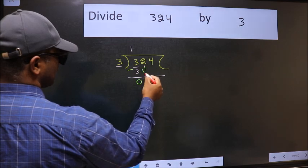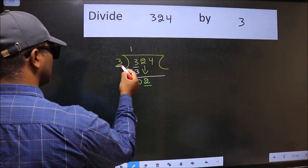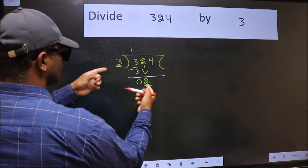After this, bring down the beside number. So 2 down. Now here we have 2 and here 3. 2 is smaller than 3.